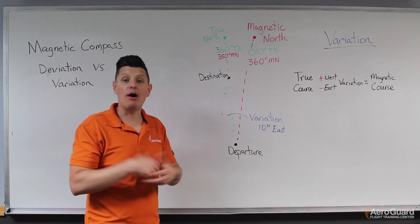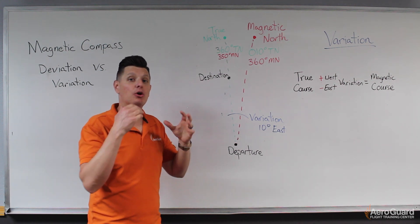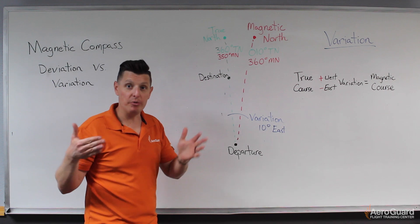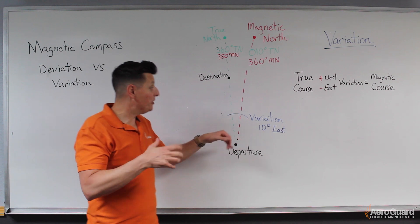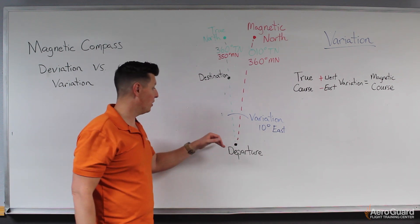So we want to account for that, and we want to make sure that the course that we're flying is aligned with what we've charted on our map. So what we do then is apply that correction value.